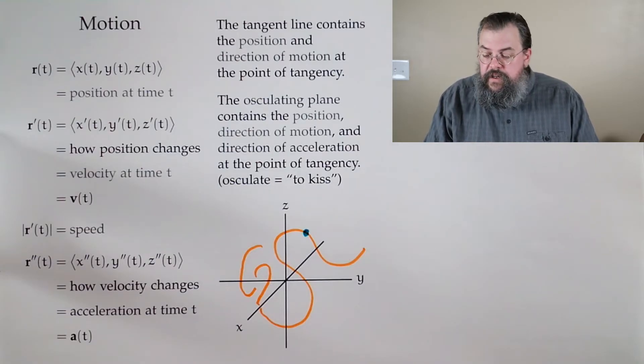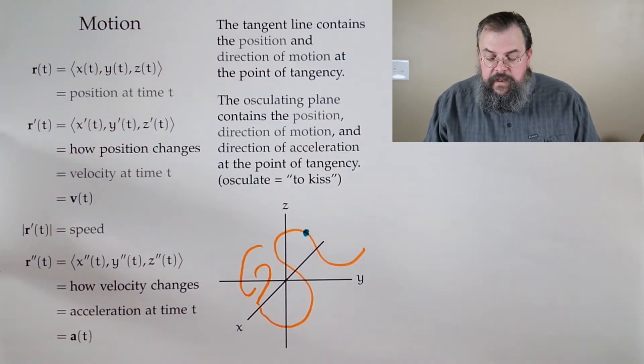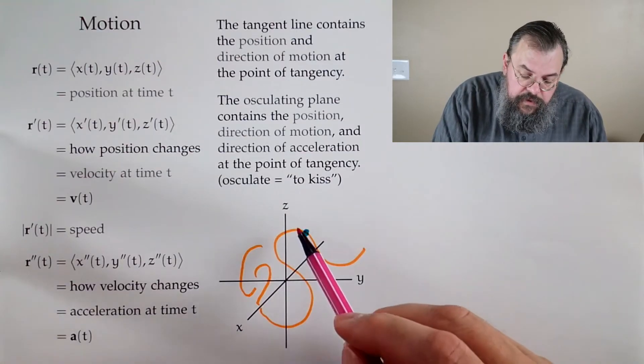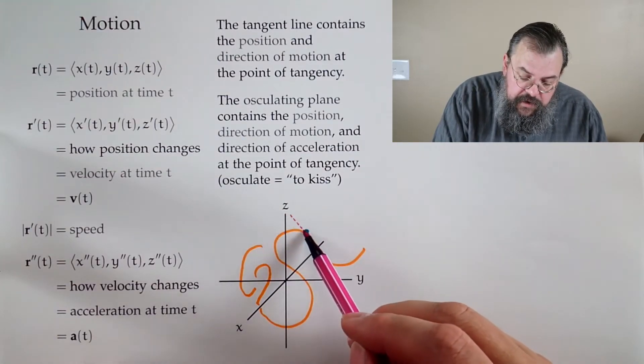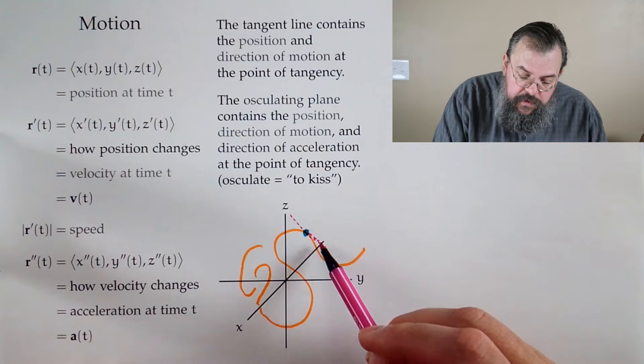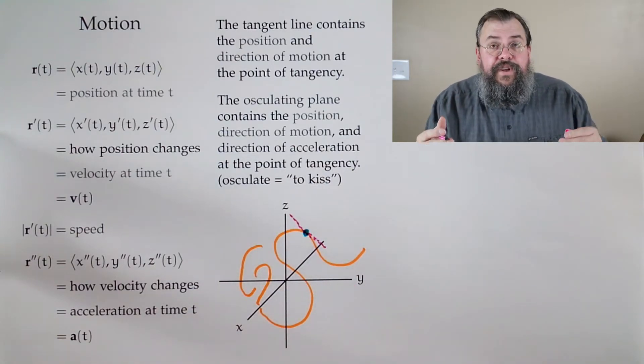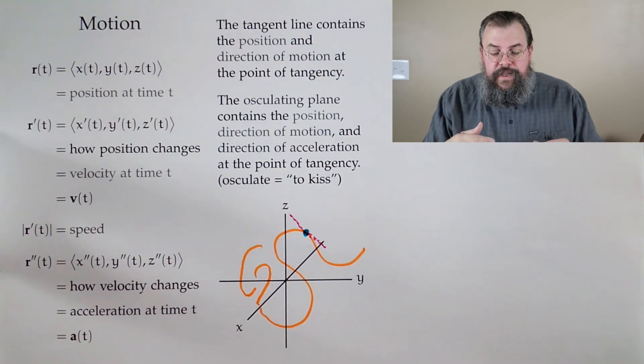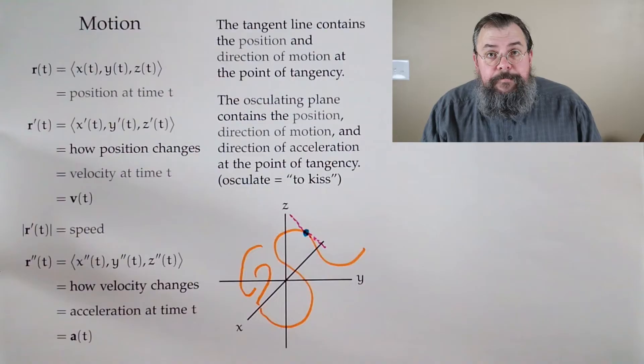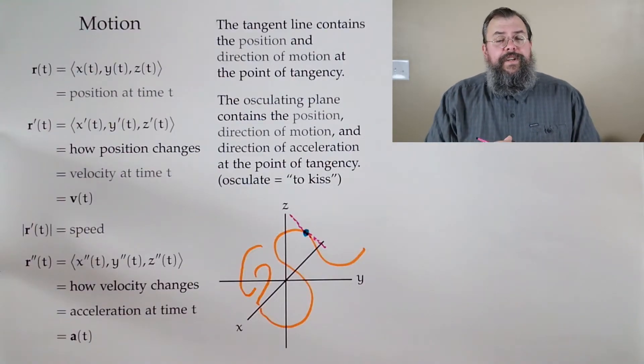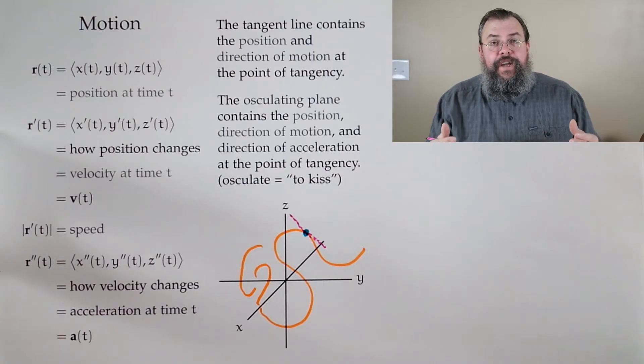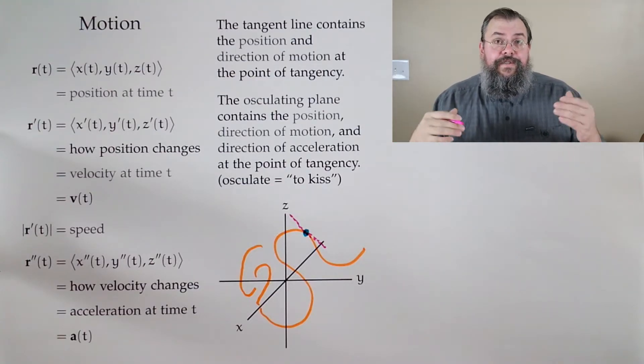If I look at a particular point here, then I could say there's some information about what's happening. In particular, we can look at the tangent line. The tangent line was storing information about the position and the change in position. In other words, it was storing information about the direction of motion.